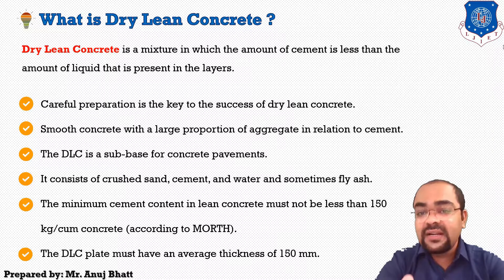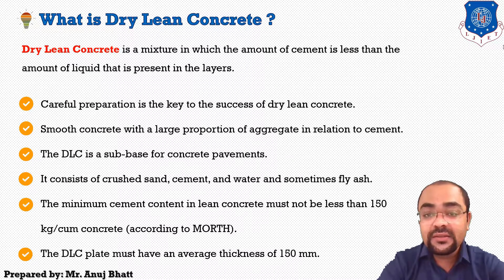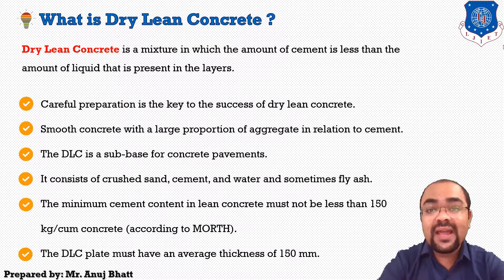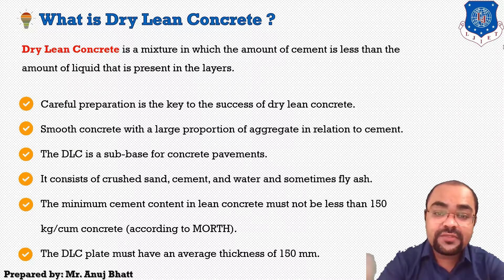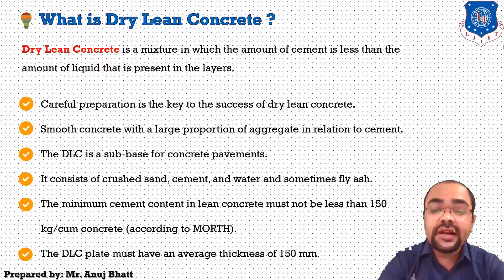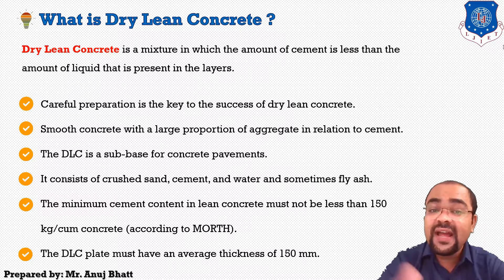The minimum cement content in dry lean concrete must be less than 150 kilograms per cubic meter — this specification comes from the MORTH. In case of fly ash, the material is blended at the site as a partial replacement of cement, and the quantity of fly ash shall not be more than 20% by weight of cement material. However, the content of OPC (ordinary Portland cement) shall not be less than 120 kilograms per cubic meter when fly ash is used.